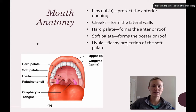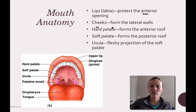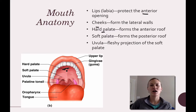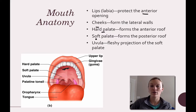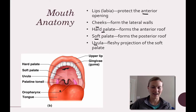More specifically: your lips are also called labia — they protect the anterior opening. Your cheeks form the lateral walls of the mouth. The hard palate is the anterior roof of your mouth. The soft palate is the back part. And the uvula is a fleshy projection of the soft palate — that thing that hangs down in the back of your throat.